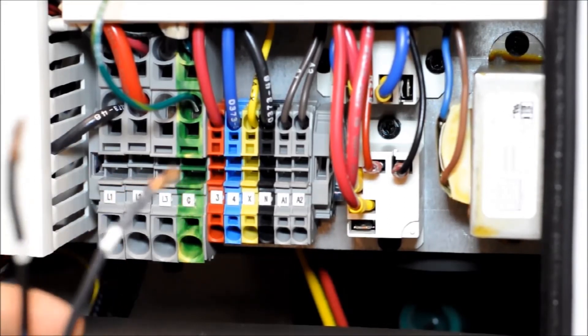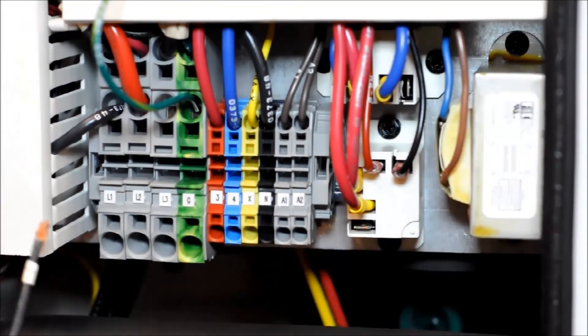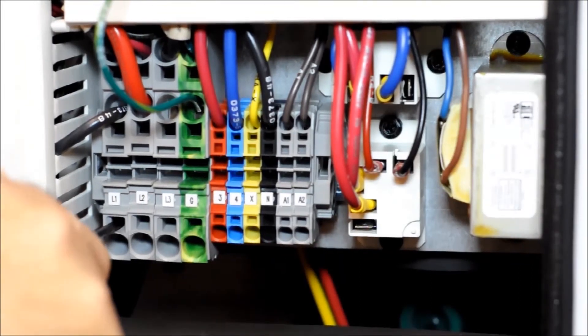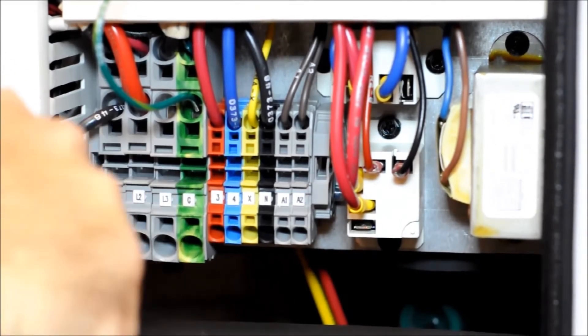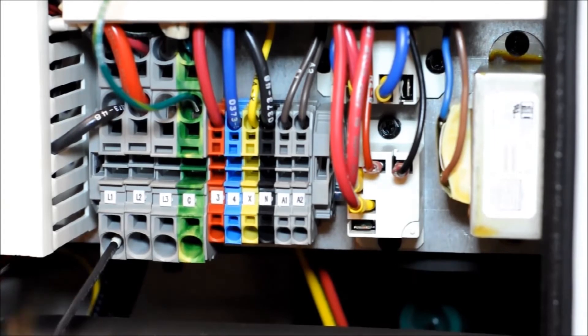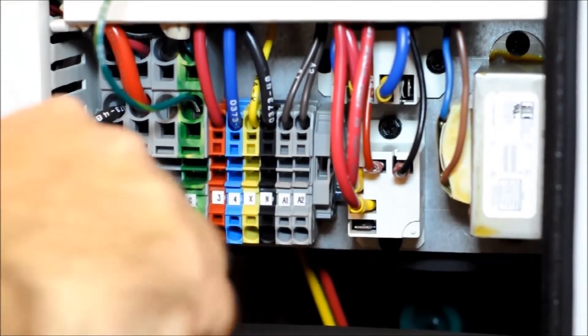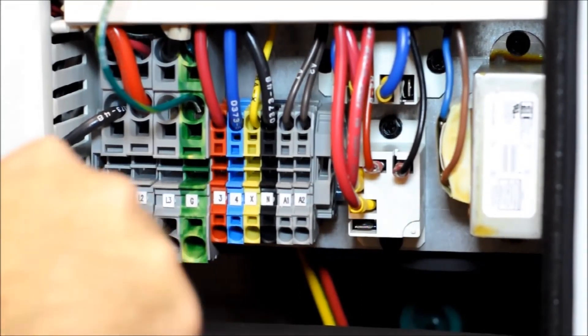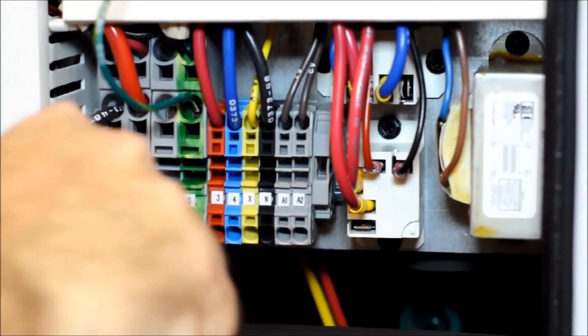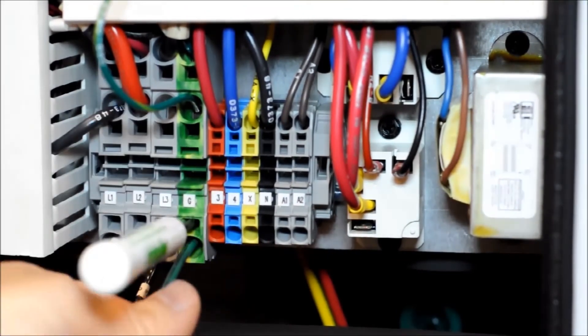So these terminals that we use on the unit are a spring cage type terminal. All you need to do is take a screwdriver and insert it into the terminal and then put a stripped wire into the wire connection and pull out the screwdriver. The wires will stay in there, so there's no need to add any type of eyelet or other type of termination to the wires. It's a very simple connection. You do this for all the wires on the unit.